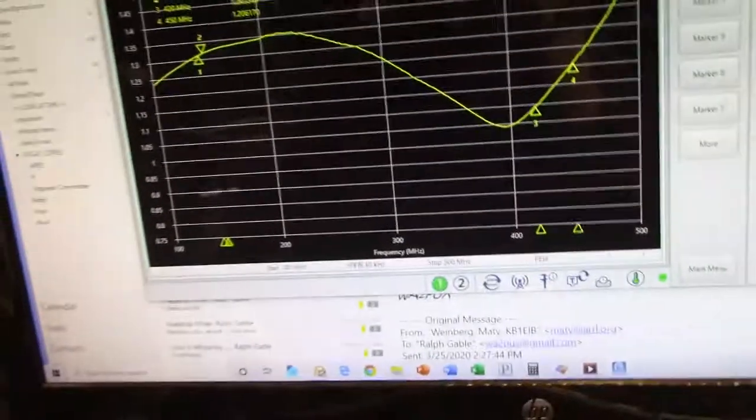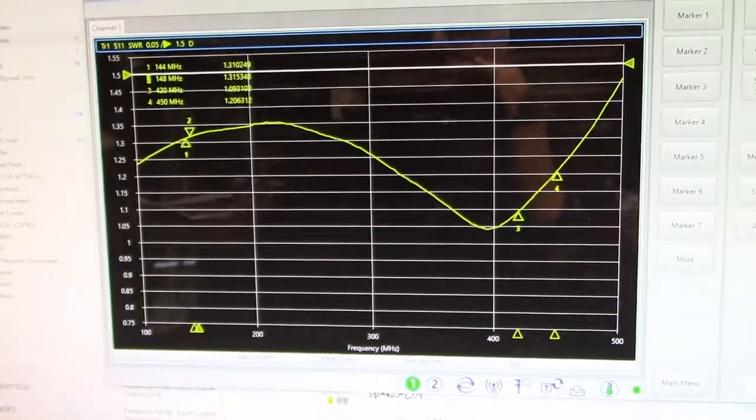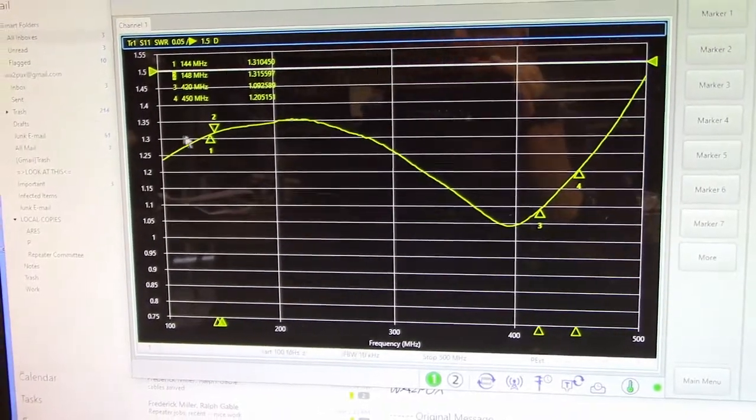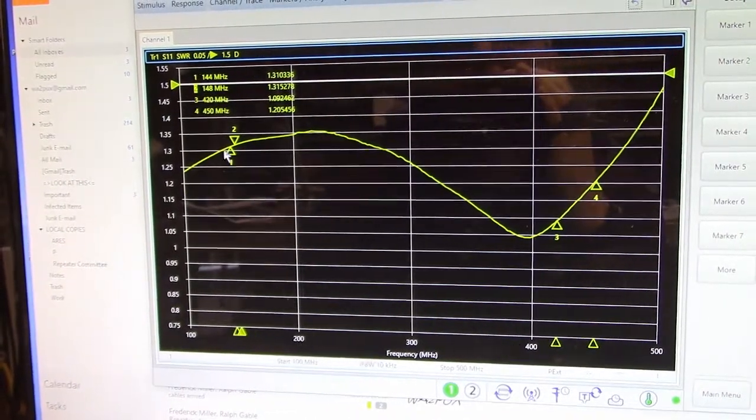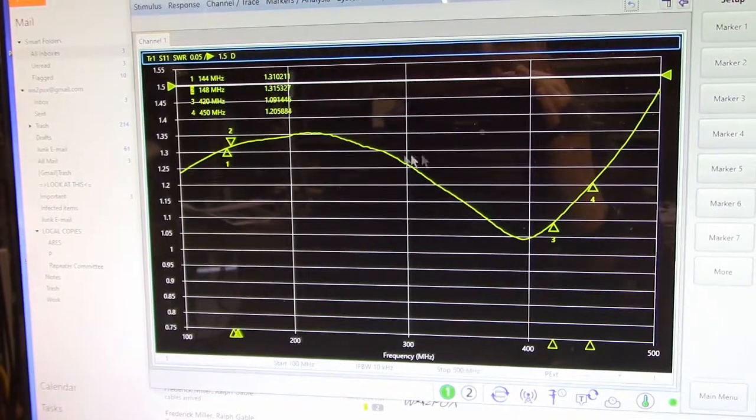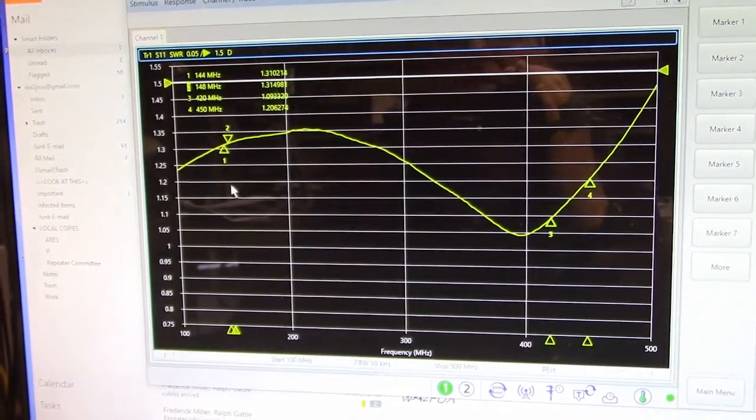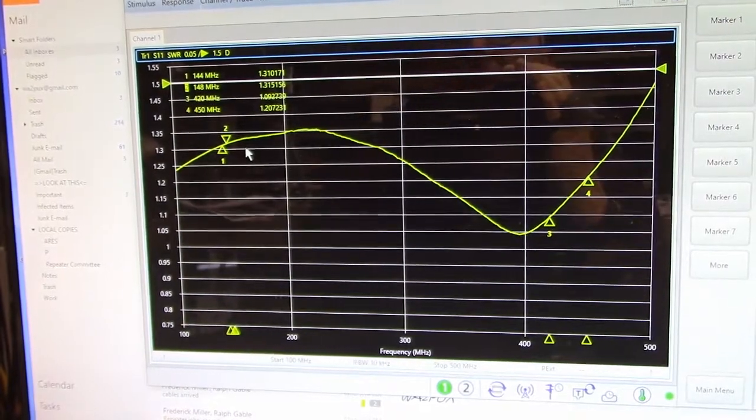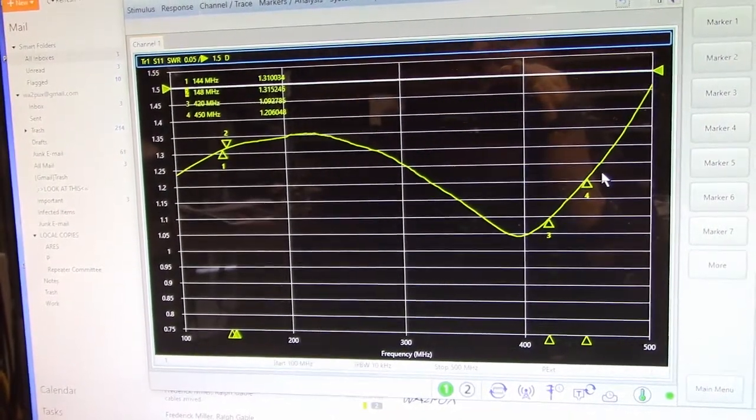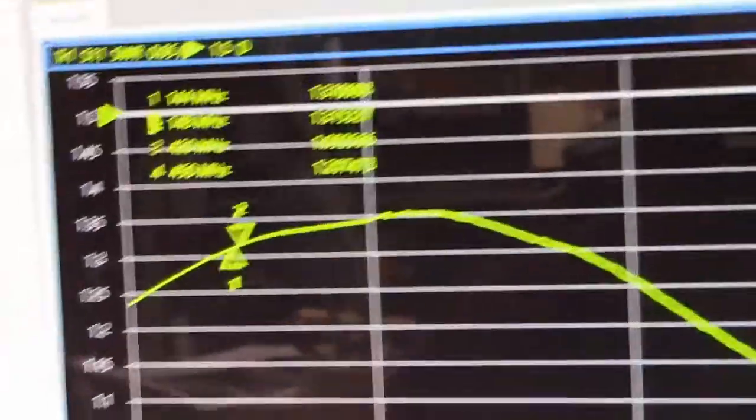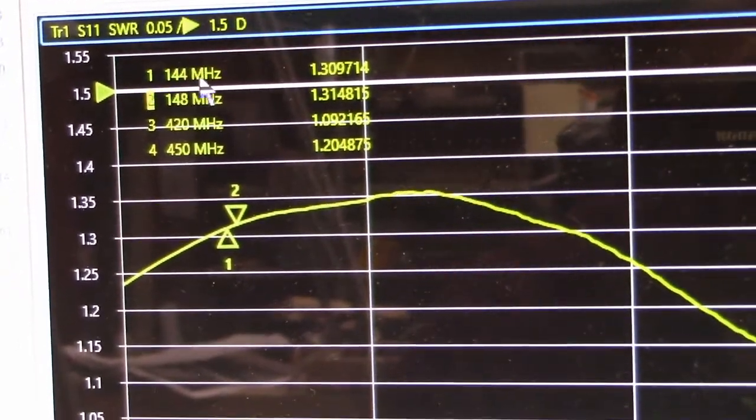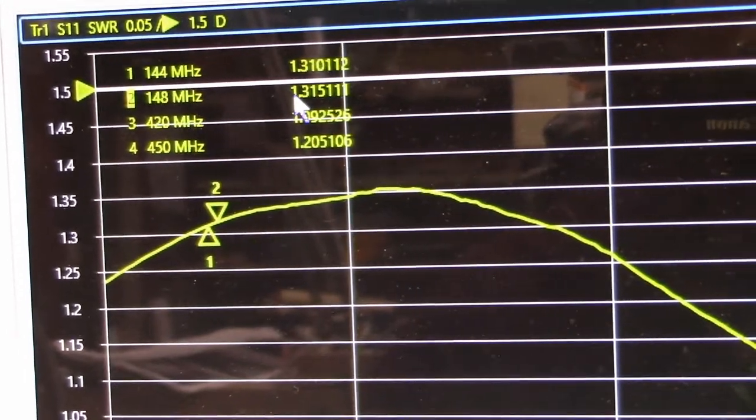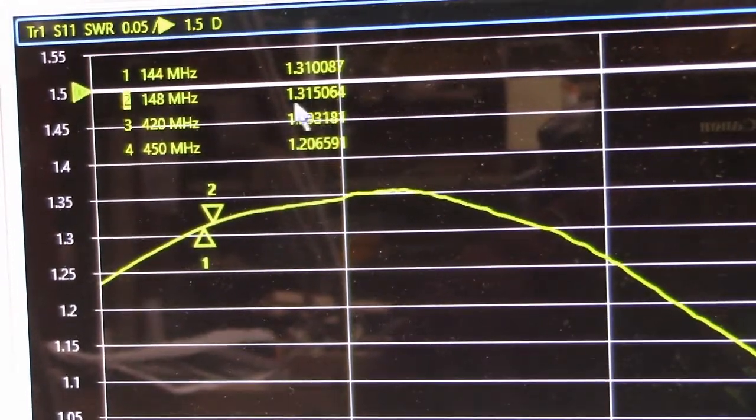Let's take a look at the results of this test. What I did is I placed some markers here. This span is from 100 megahertz to 500 megahertz. This is the two meter band here, and this is the 70 centimeter band. Notice my markers at 144 megahertz to 148, the value is 1.3 to 1 across the entire 2 meter band.